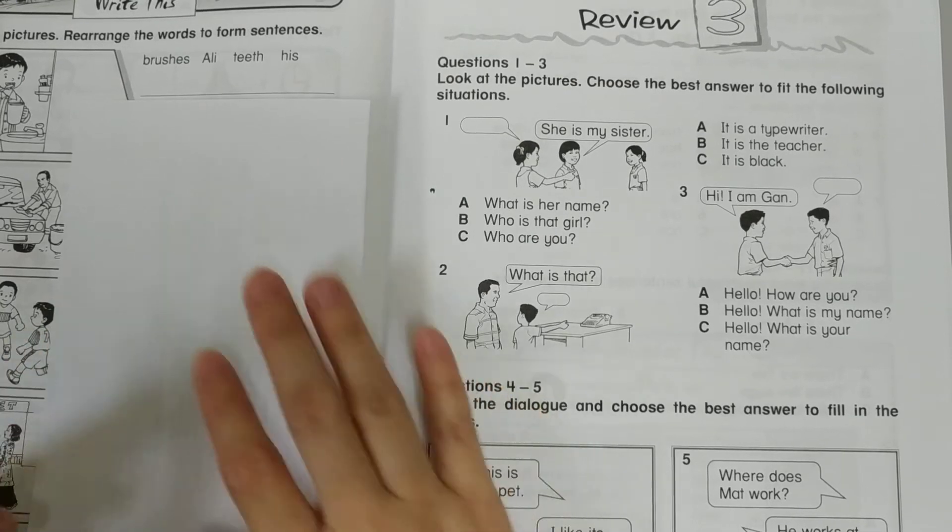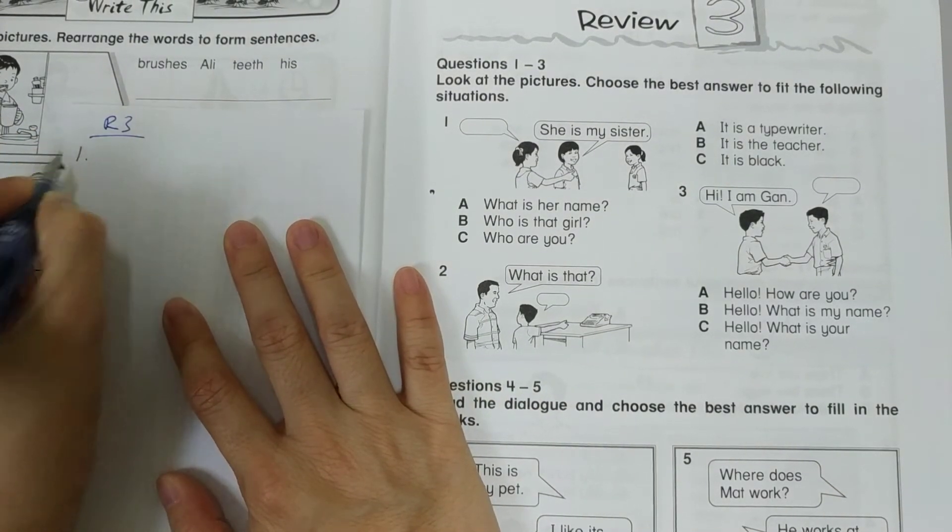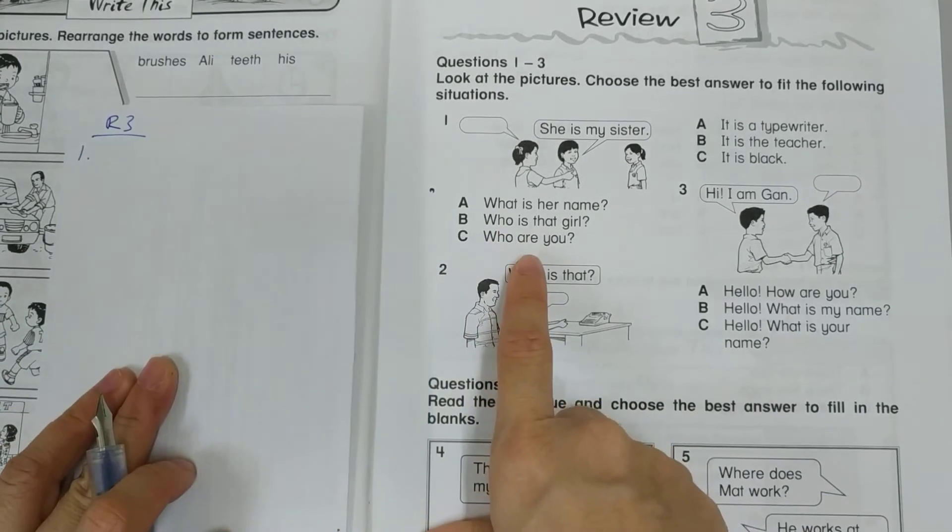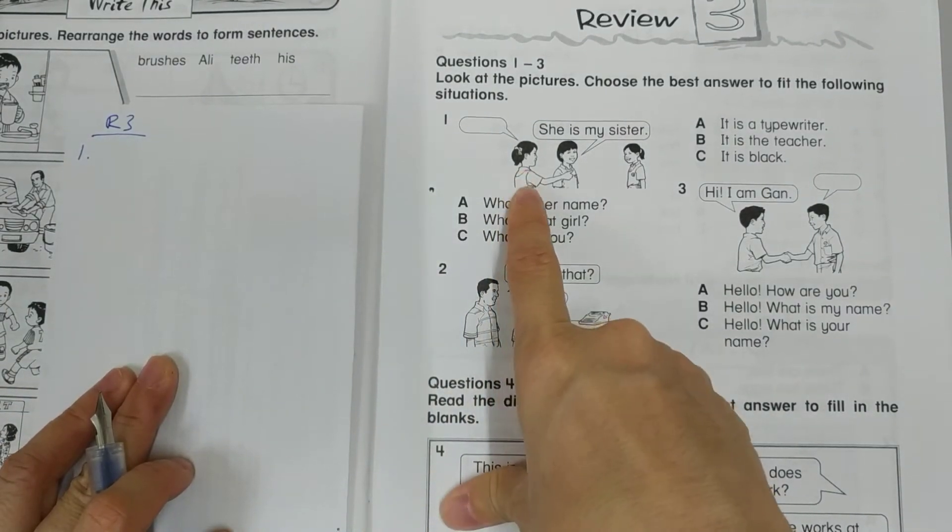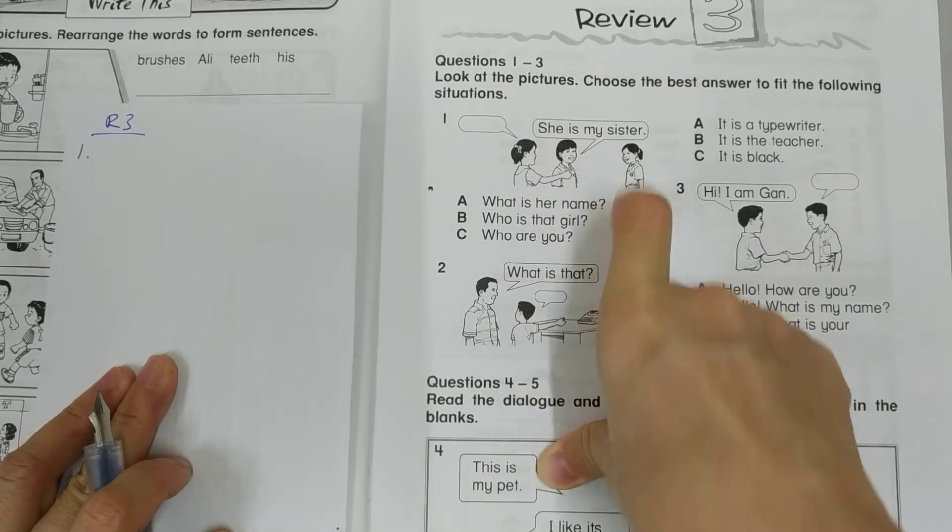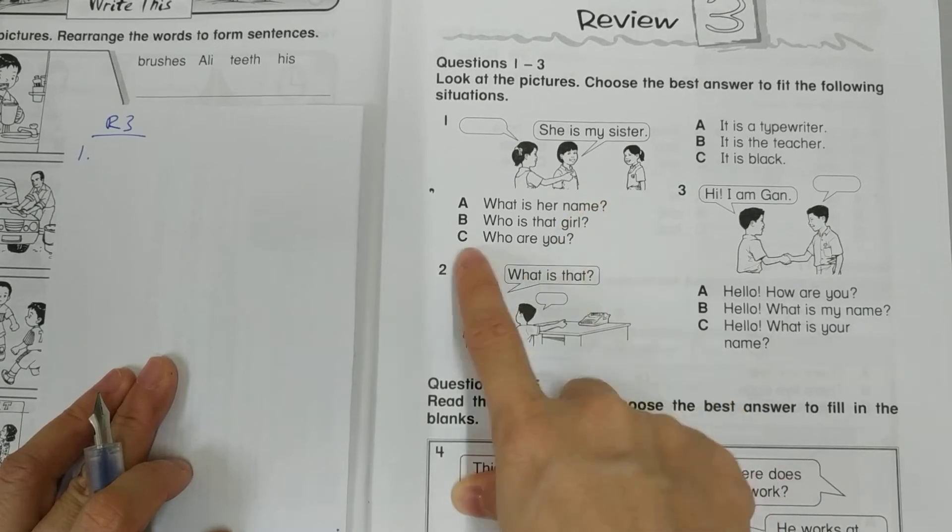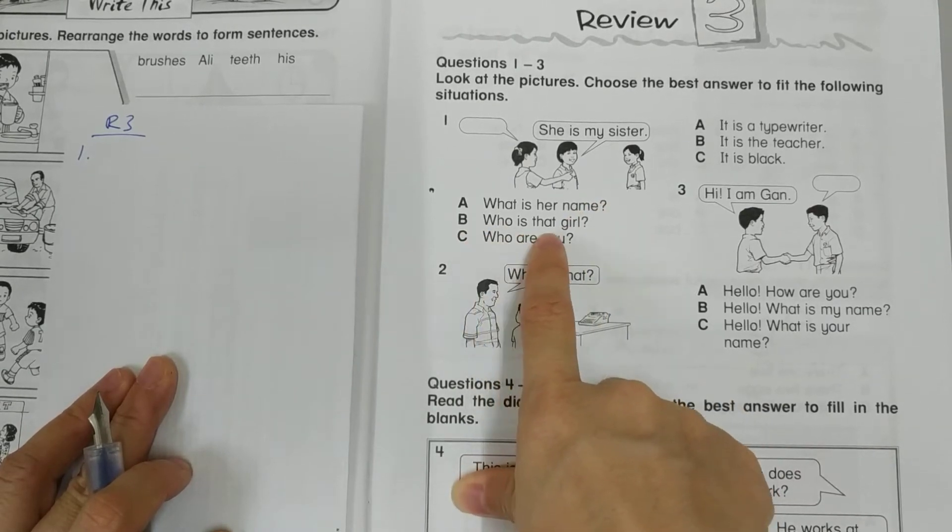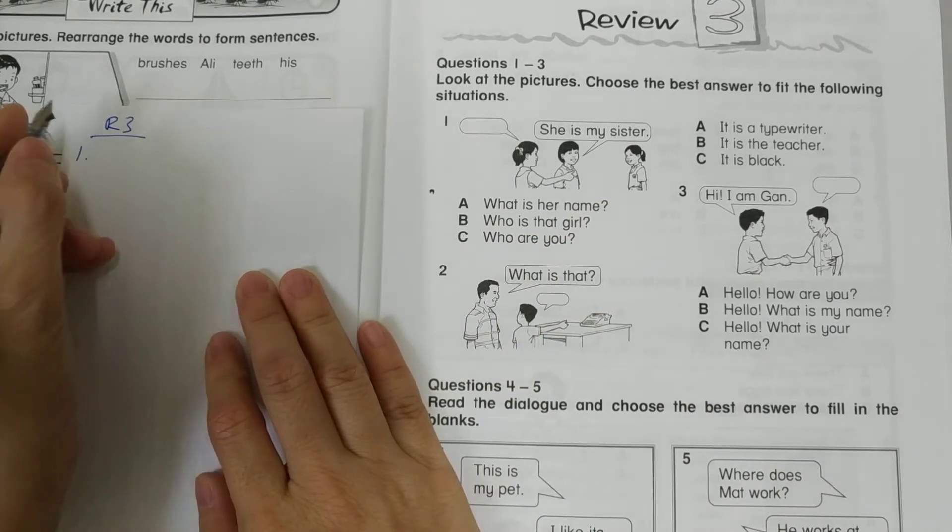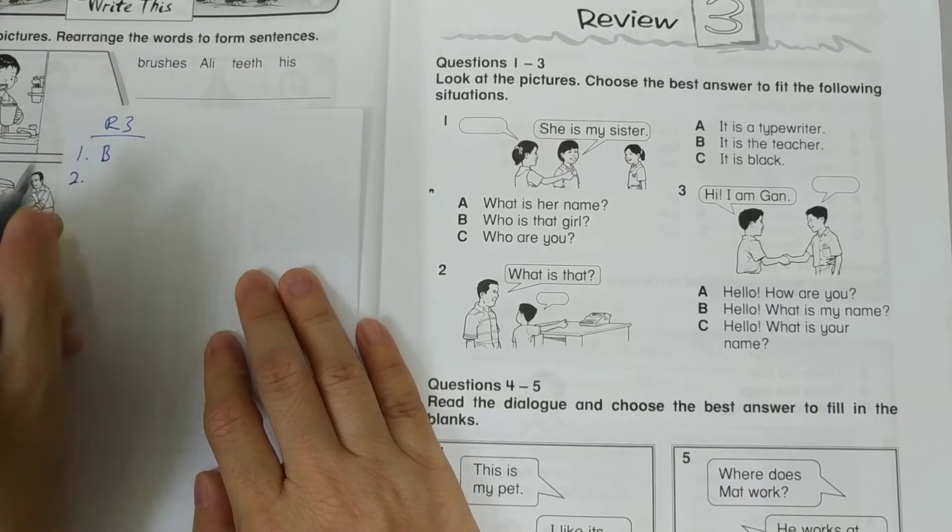So number 1. She's asking a question and she replied, she is my sister. So the correct question would be, who is that girl? You don't know who is it. That's why you are asking.